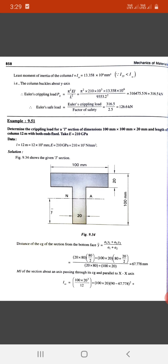The column will buckle about the y-axis. Euler's crippling load equals pi squared EI upon L squared, which equals pi squared into 210 times 10 to the 3 into 13.358 times 10 to the 6 upon 9353.2 squared.